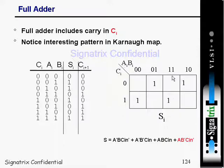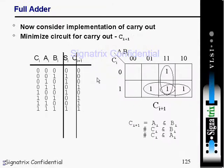After implementing the K-map, we get: Sum = A̅·B·Cin̅ + A̅·B̅·Cin + A·B·Cin + A·B̅·Cin̅. This is the equation for the sum in the full adder case. Now consider the implementation of the carry-out.